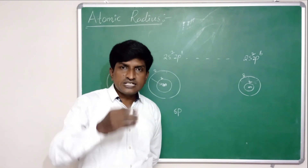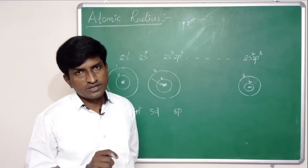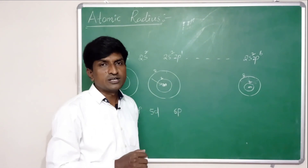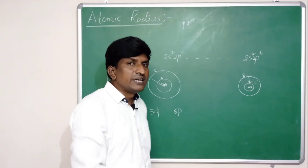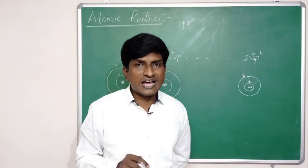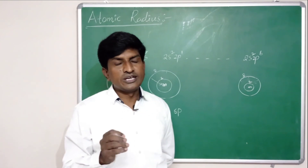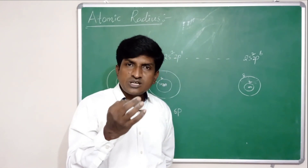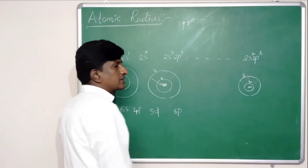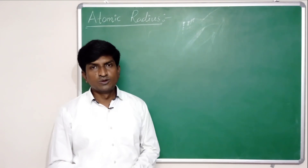In summary: in groups, the atomic radius increases from top to bottom because each element going down is added with one extra orbit. From left to right in a period, the atomic radius decreases because each element is added with one extra electron, and correspondingly one proton is added to the nucleus. Due to the increase in nucleus charge, the outermost orbits are attracted more towards the nucleus, causing the atomic radius to decrease. Now, what about the atomic radius of ions?